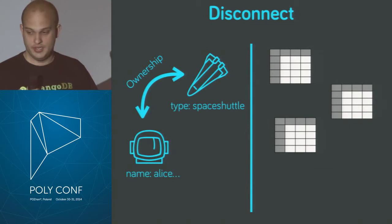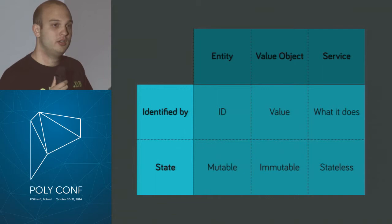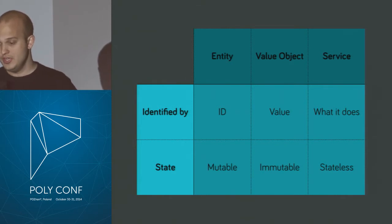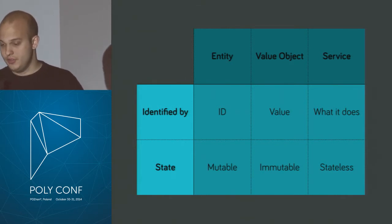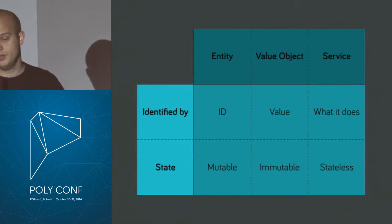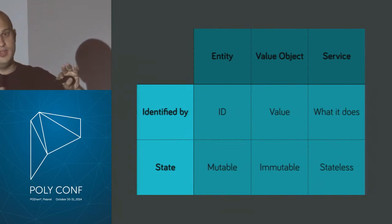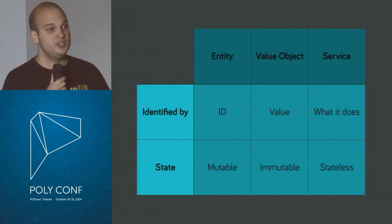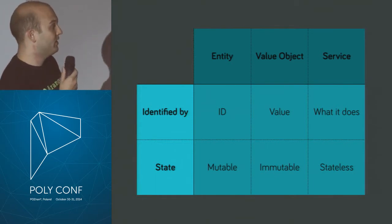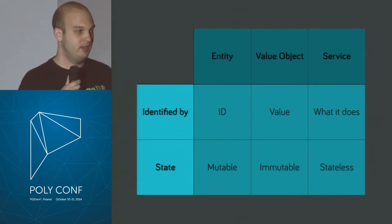Let's talk about the domain world. Eric Evans suggests different kinds of objects. The first three are the entity, the value object, and the service. An entity is identified by its identity — a person is an entity. If something about a person changes, like they get married and change their last name, it's still the same person. Therefore, the state of an entity needs to be mutable.